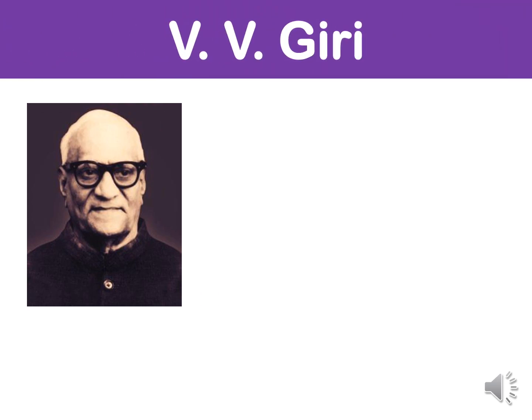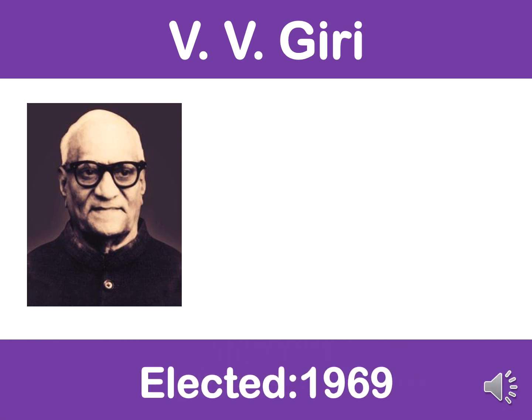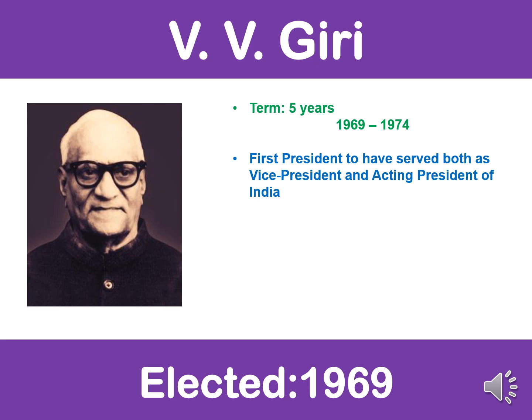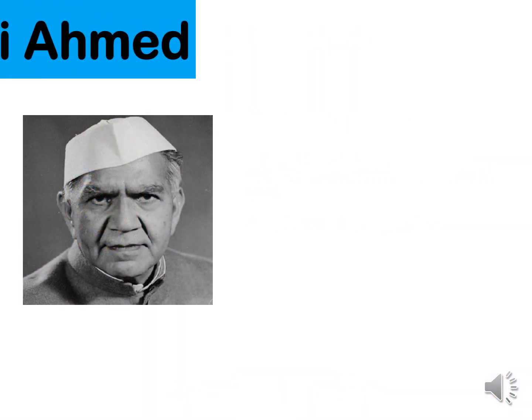The next president of India was again V.V. Giri. He was elected in 1969 and served a term of five years from 1969 to 1974. He was the first president to have served both as vice president and acting president of India. He was an independent candidate with no affiliation to any political party.